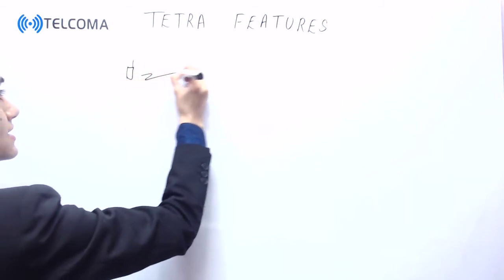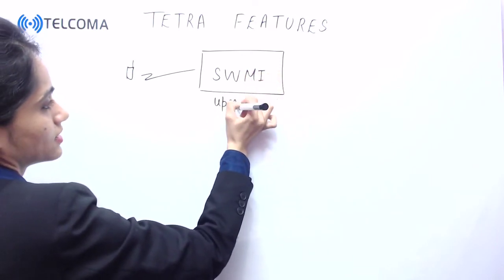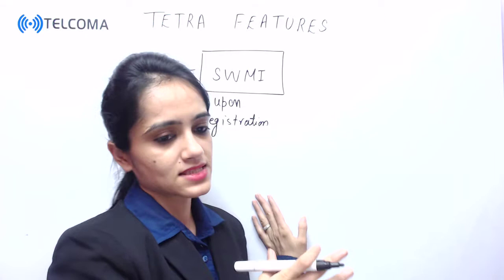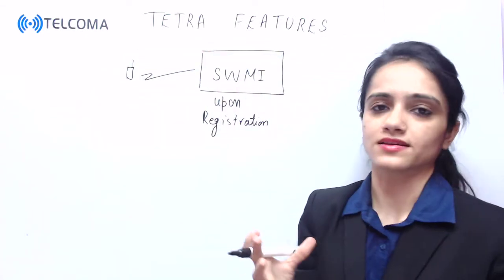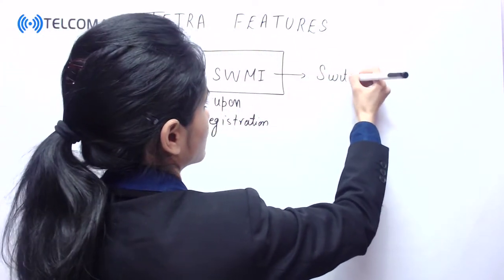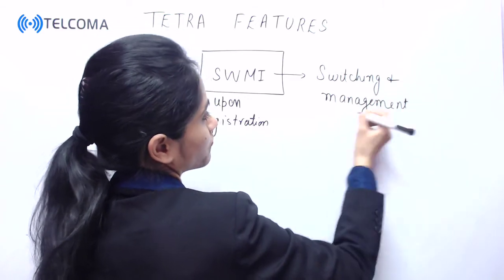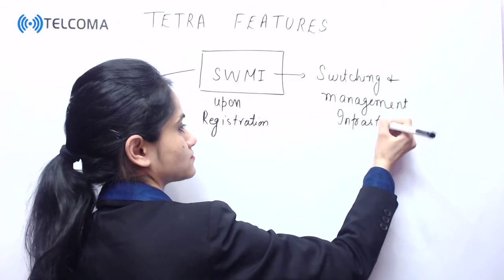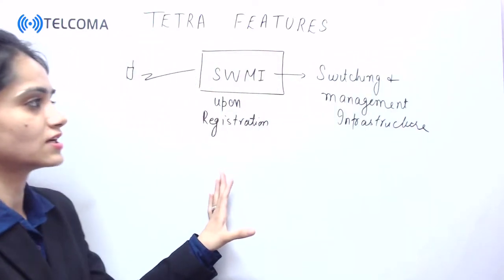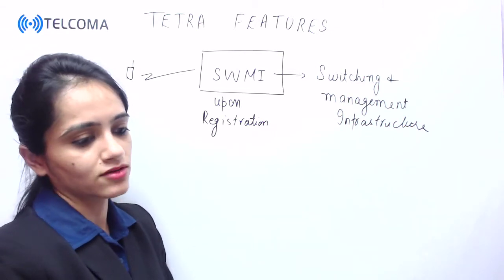SWMI stands for Switching and Management Infrastructure. A mobile can send its membership information to SWMI upon registration. The group information — such as group area and group members — is stored in SWMI.